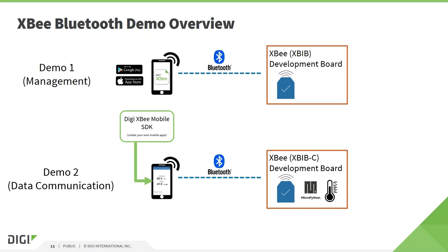The sensor data comes from the temperature and humidity sensor integrated on the XB development board. To make this work, we need additional MicroPython code on the XB module that will retrieve the sensor values and push them to the Bluetooth interface when needed. We can take the required MicroPython code from a sample included in the Digi PyCharm IDE plug-in for MicroPython. Digi provides all the puzzle pieces to create IoT applications, highlighting the value of the Digi XB ecosystem.